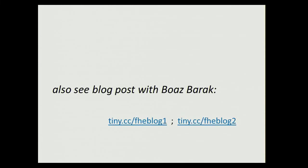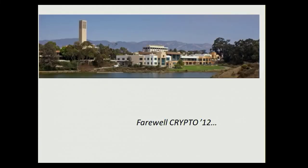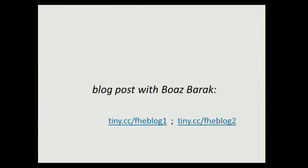Scale independence gives you fully homomorphic encryption without module switching. The homomorphic properties are independent of Q, but there is an underlying Q governing security. All properties of BGV extend, and hopefully this is simpler to understand. I'll also refer you to a blog post with Boaz Barak that describes the full scheme based on this paper—when people ask me where to start on homomorphic encryption, that's where I point them. Thank you very much.